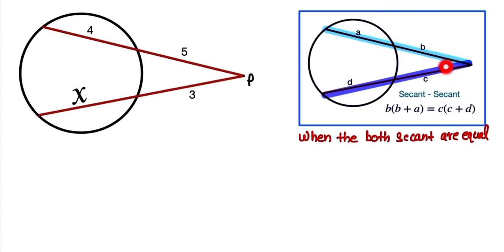Here when we multiply the external length b with the sum of both lengths, external and internal a plus b, this is equal to when we multiply the external length c with the sum of c and d. Just look at here, so we use this: b into b plus a, and c into c plus d. This theorem, so we put the value on this theorem.